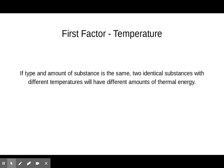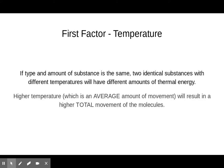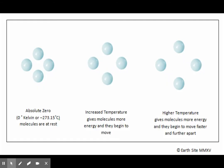If the type and amount of substance is the same — if you have the same substance and the same amount — then two identical substances with different temperatures will have different amounts of thermal energy. Higher temperature will result in a higher total movement of molecules, and the more movement you have, the more thermal energy you have. At absolute zero there is no movement. A little bit of temperature means a little bit of movement, and higher temperature means more movement and more thermal energy.